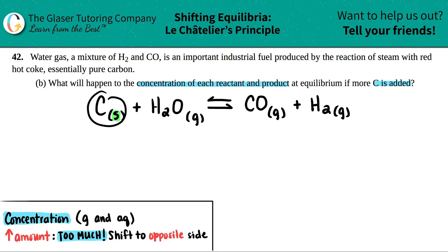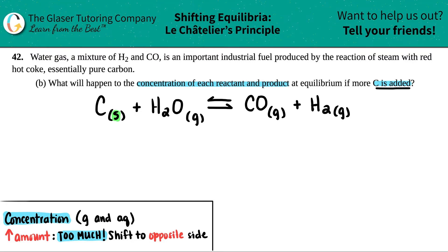If you look back at letter A when we did the K formula, carbon was not included. No solids are included. So if it's not in that equation, it has nothing to do with equilibrium. I don't care if I add it or get rid of it — it's not going to affect anything. This was a trick: we tried to add more carbon, but since it's a solid, we don't apply Le Chatelier's principle.